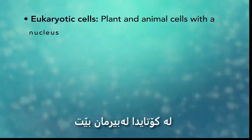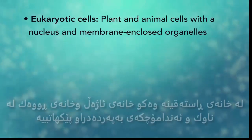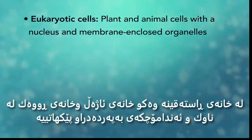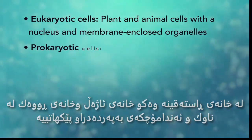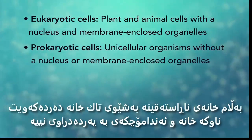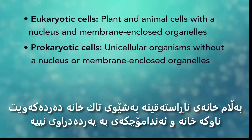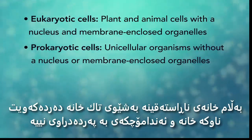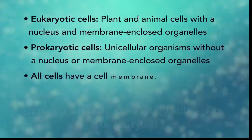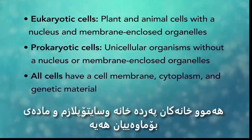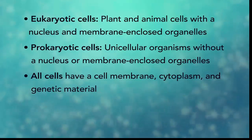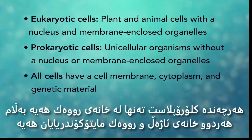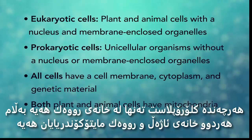In summary, eukaryotic cells are plant and animal cells with a nucleus and membrane-enclosed organelles, while prokaryotic cells are unicellular organisms without these things. All cells have a cell membrane, cytoplasm, and genetic material. And even though only plant cells have chloroplasts, both plant and animal cells have mitochondria.